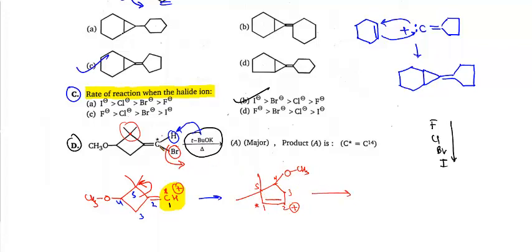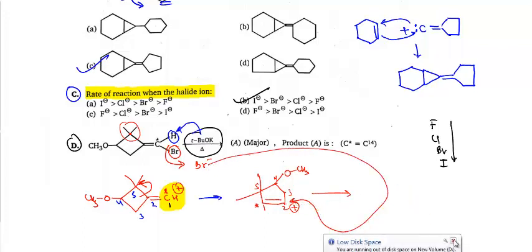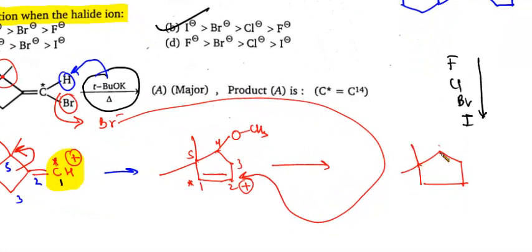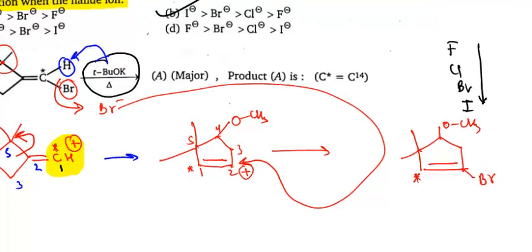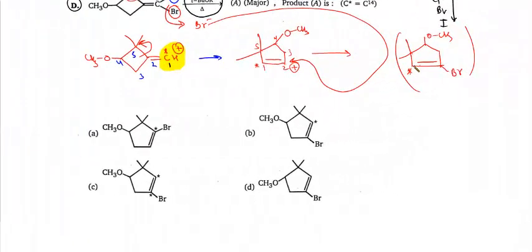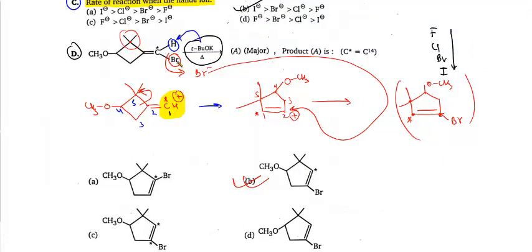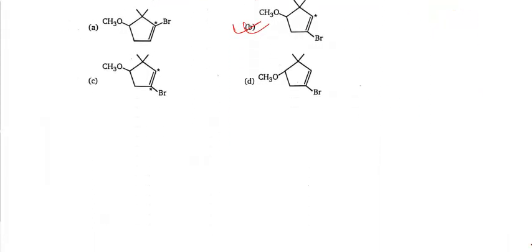Now, the Br⁻ that left — in its form it will go and attack this positive charge. When it attacks the positive charge, see what product forms: add two methyl groups here, OCS₃ here, double bond here with a star, and Br on the neighboring carbon of star. The neighboring carbon also has two methyls. This matches option B. So the correct answer for D is B. You can also do this by first generating carbene and then expanding the ring — two methods work.